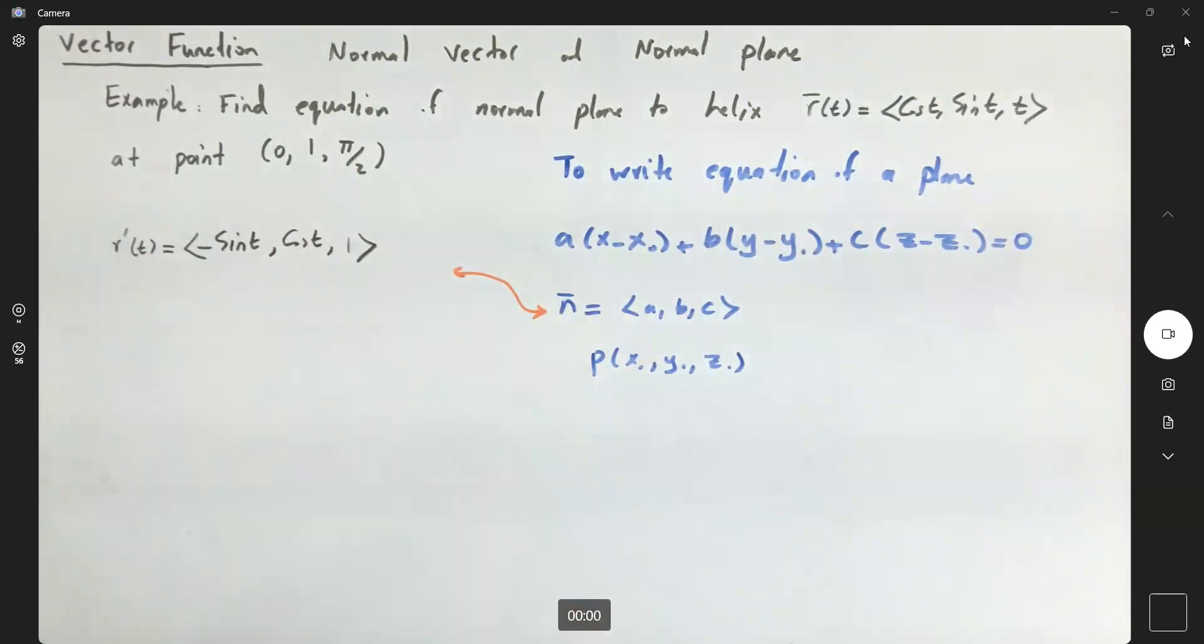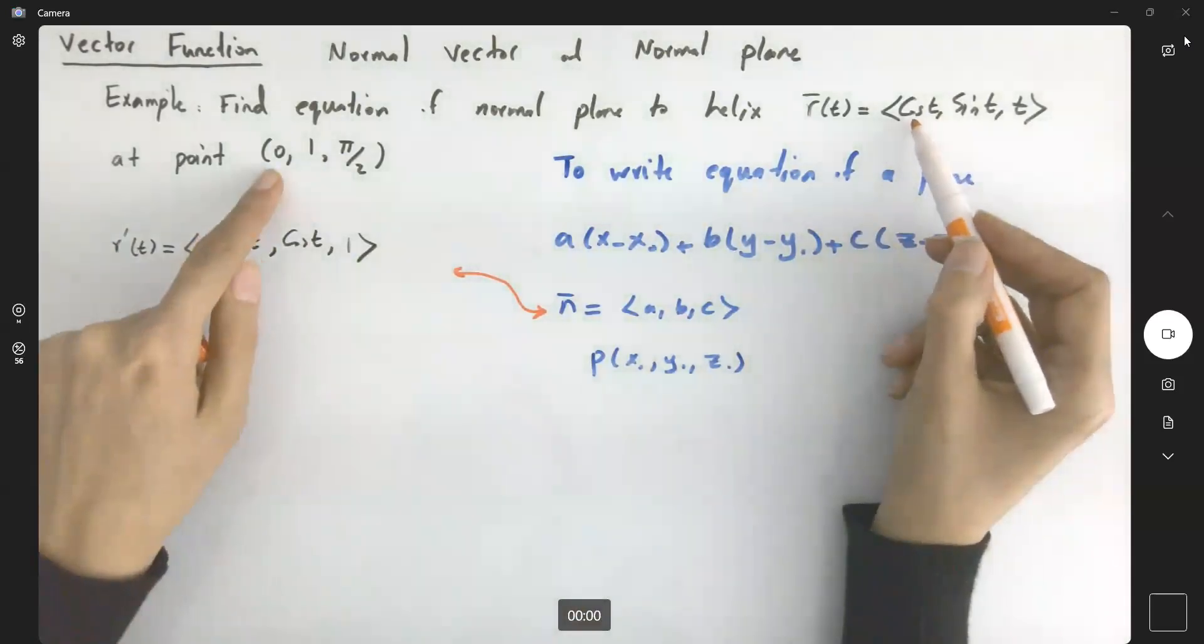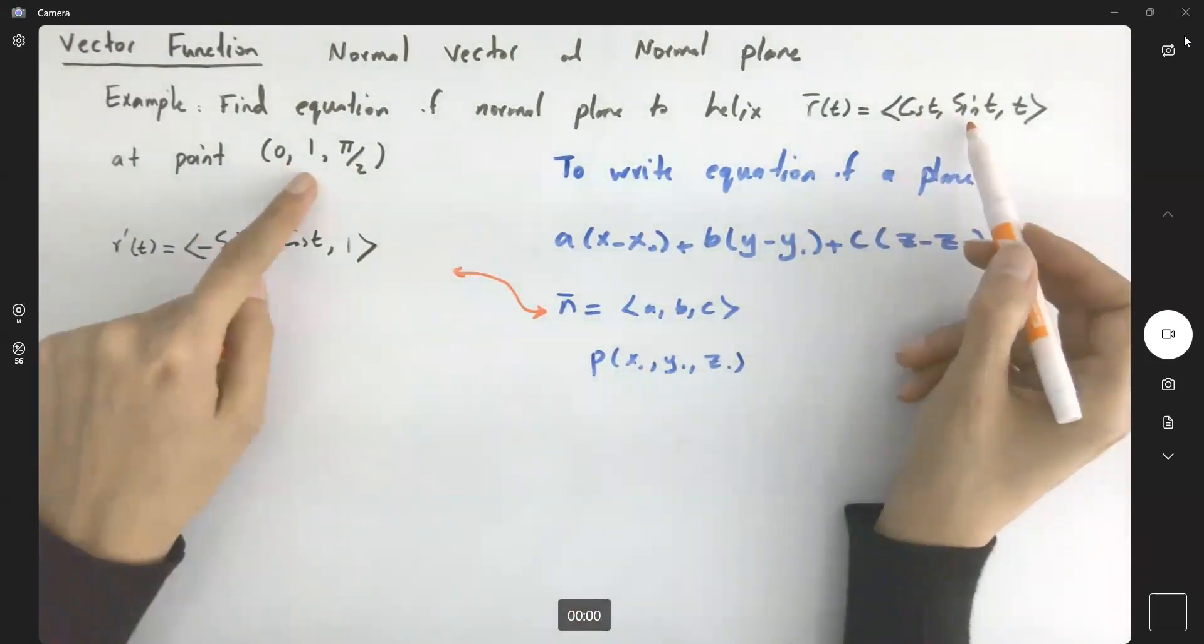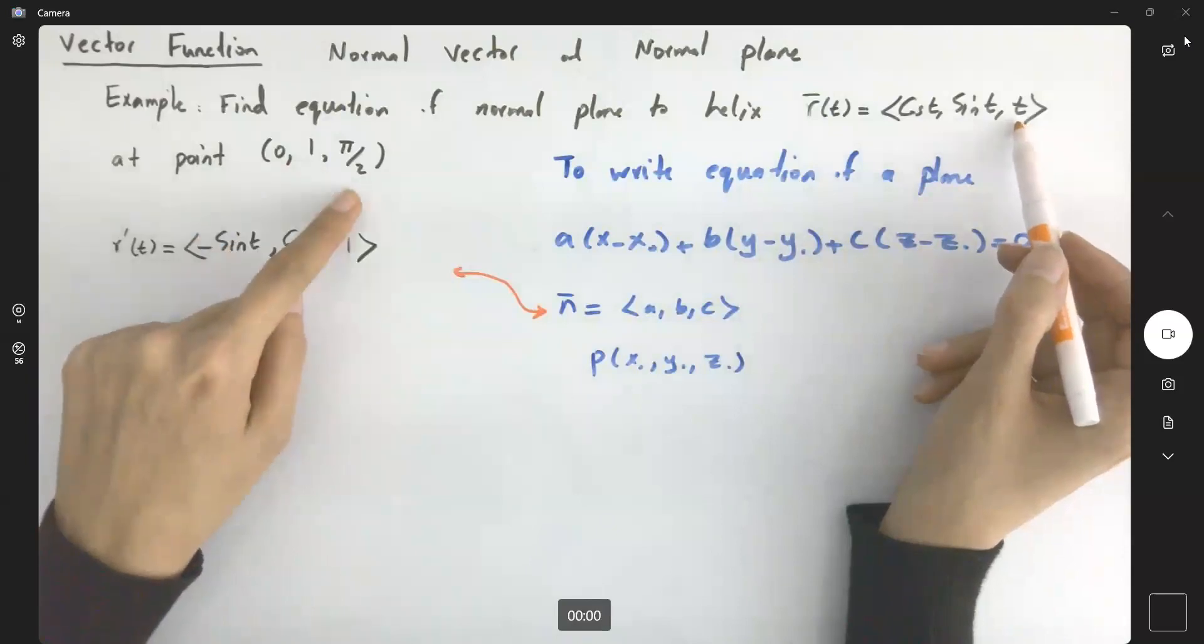And now what is the t value? Remember that x is cos t, x is zero; y is sin t, y is one; z is t, z is π/2.